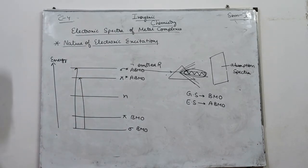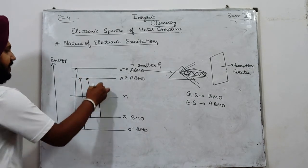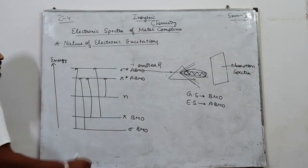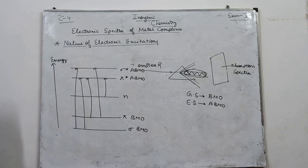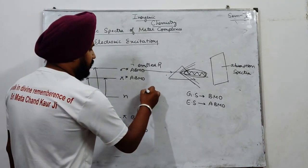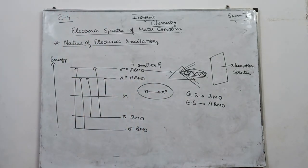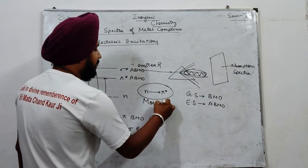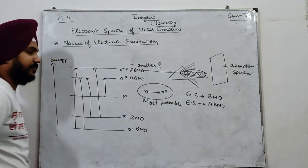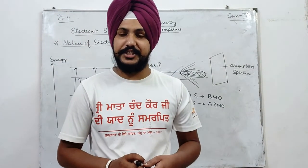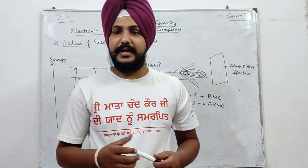The possible transitions are: sigma to sigma-star, sigma to pi-star, pi to pi-star, pi to sigma-star, and N to pi-star. Looking at all possible transitions and their energy differences, the N to pi-star transition has the most important energy difference and is the most probable transition for complex molecules.